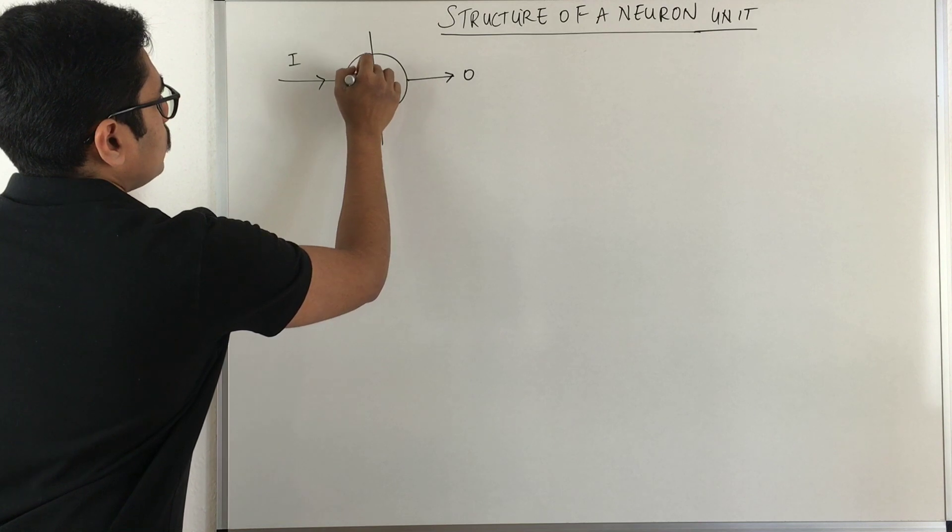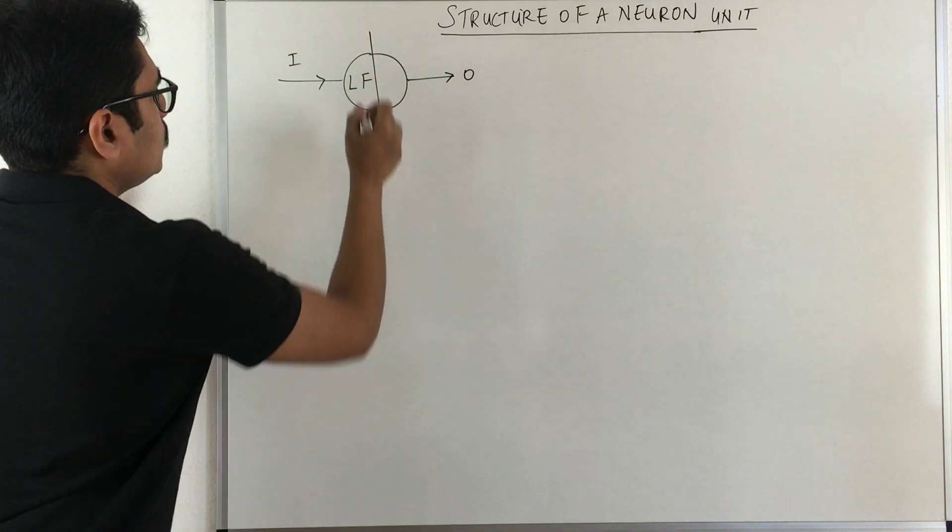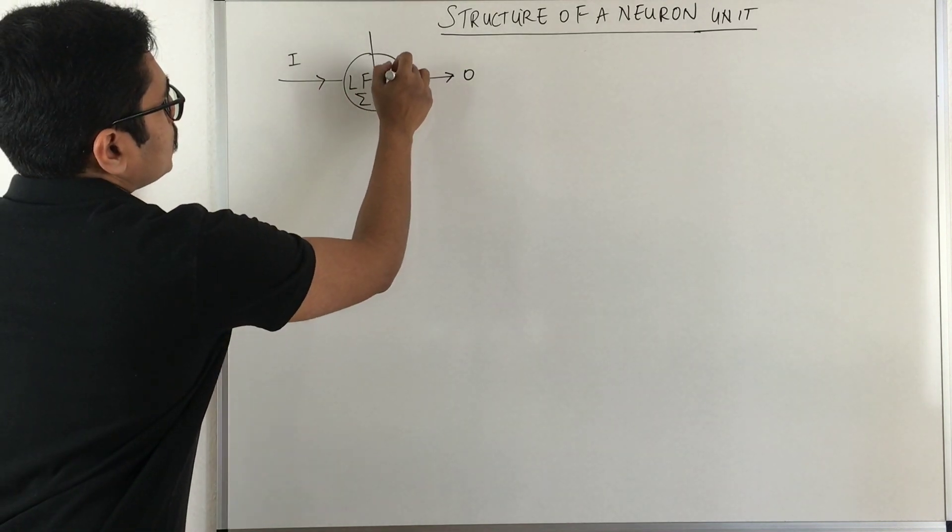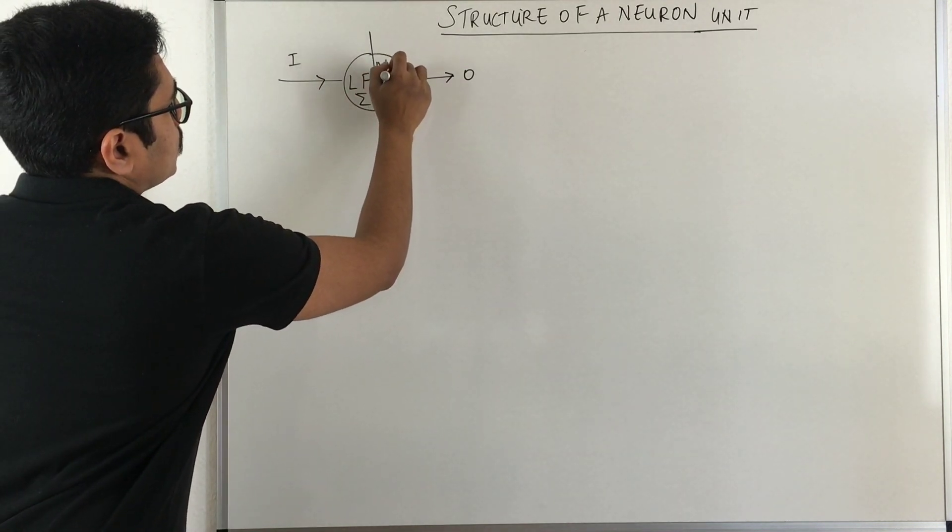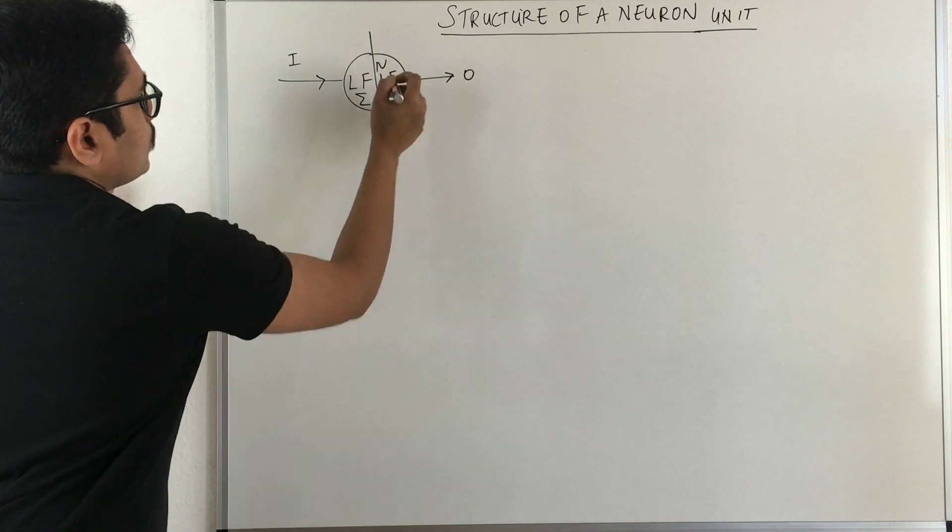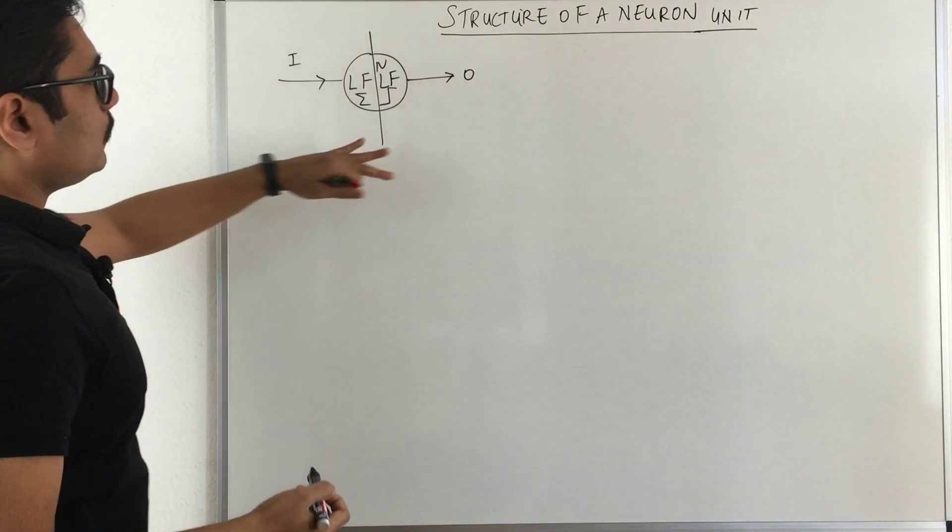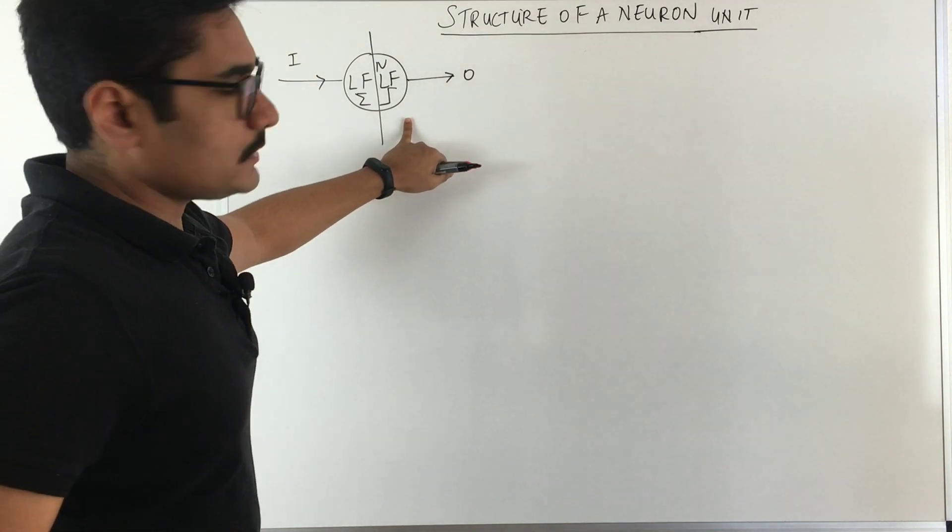This particular neuron is internally divided into two portions. First on the left hand side, you have something called as a linear function, which is nothing but your summation, and then you have something called as a nonlinear function NLF. Here for example, we are using a step function. We'll come into later why we cannot use a step function.